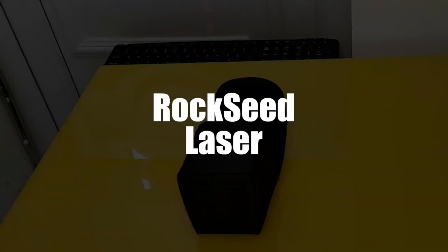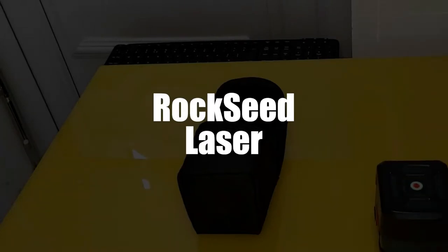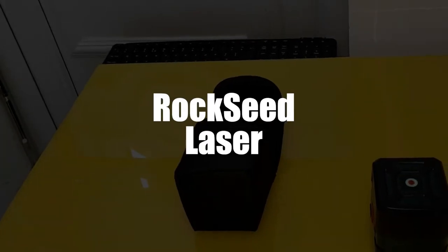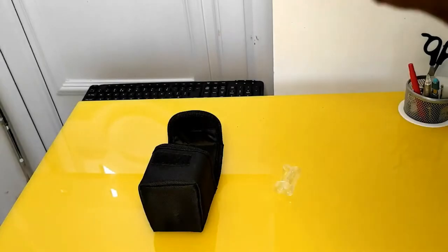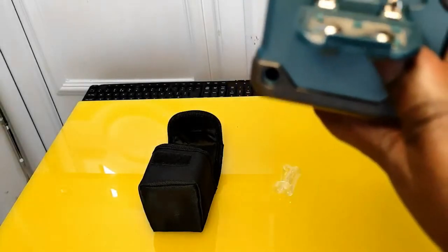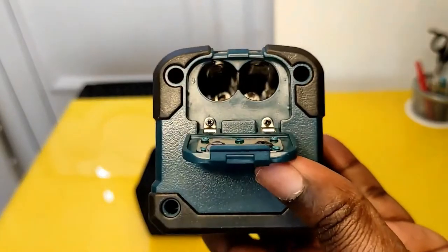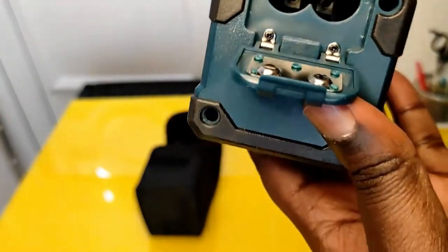First off in fourth place we have the Rockseed Laser Cross LV-1 Self-Leveling Laser. Whether you want to install pictures, make doors, mount cabinets, or find horizontal and vertical lines, this cross laser level will make your life much easier.